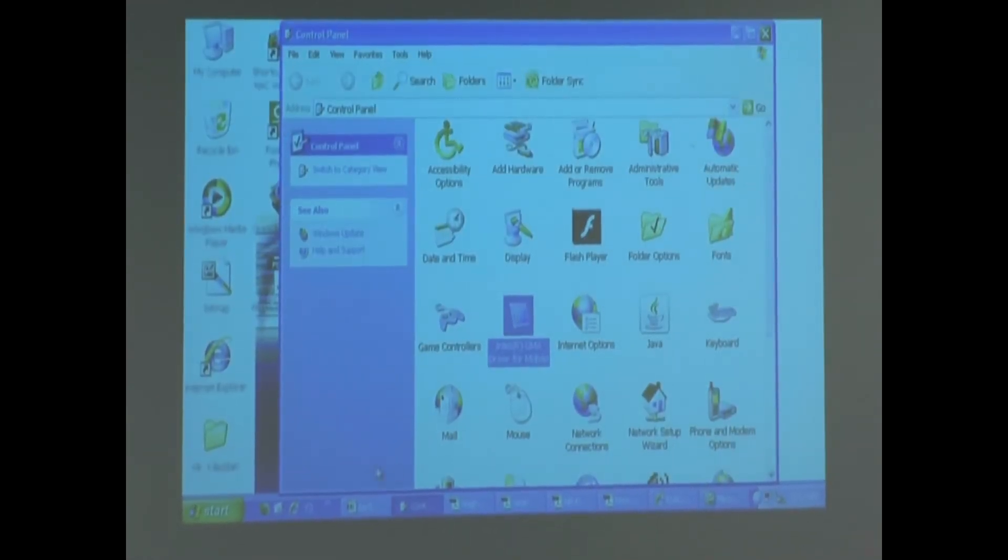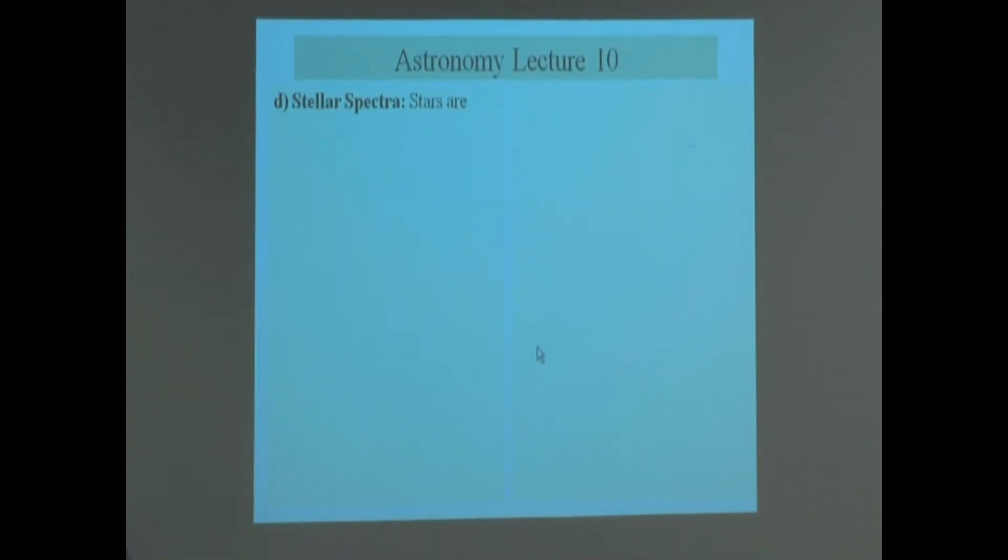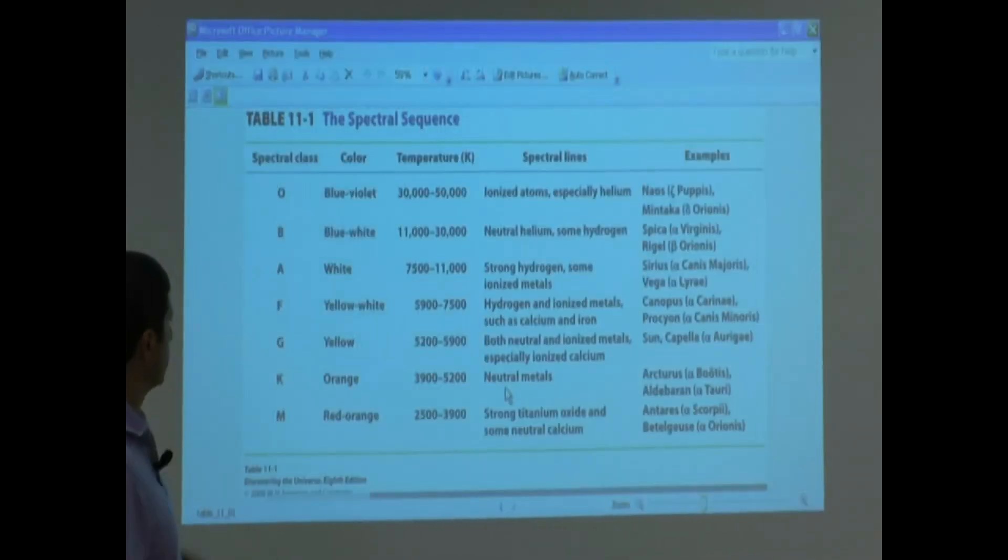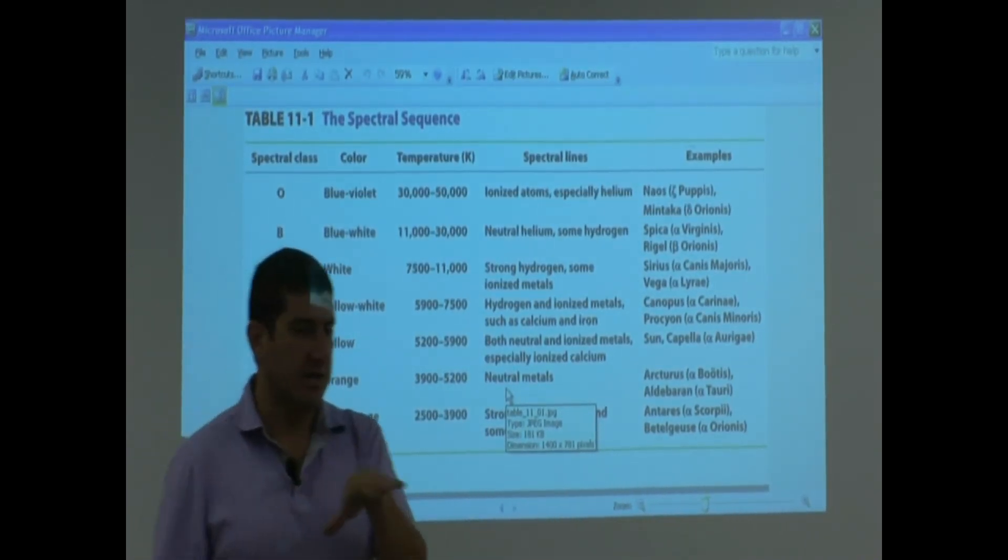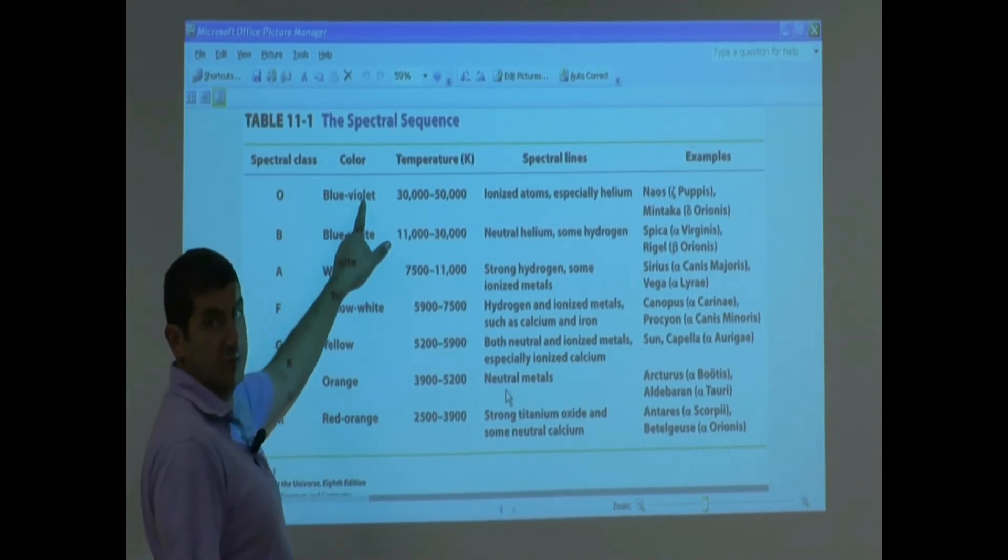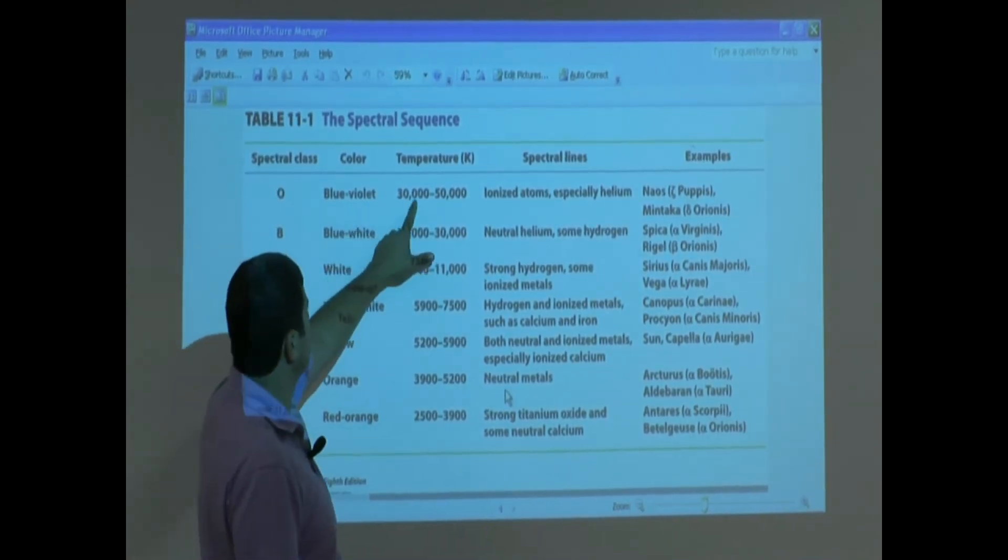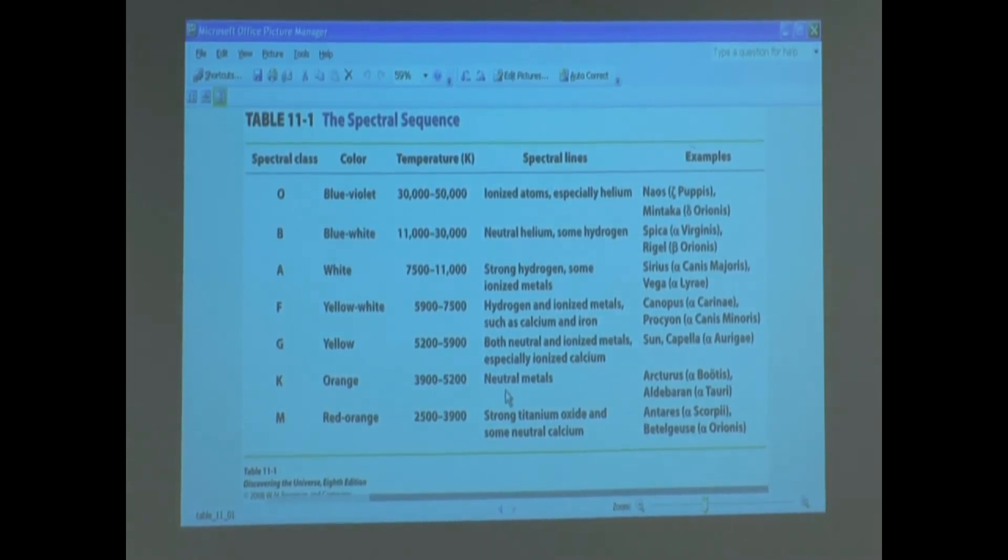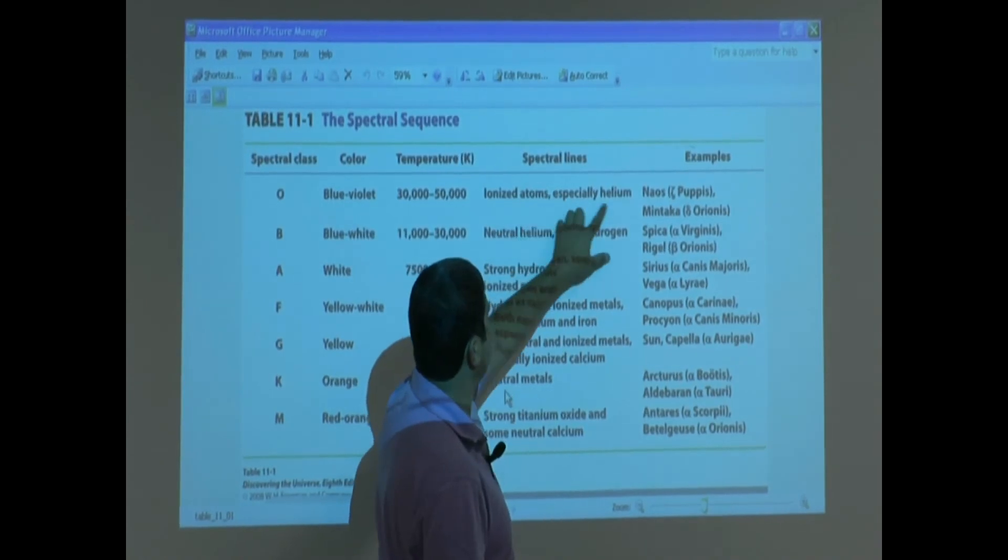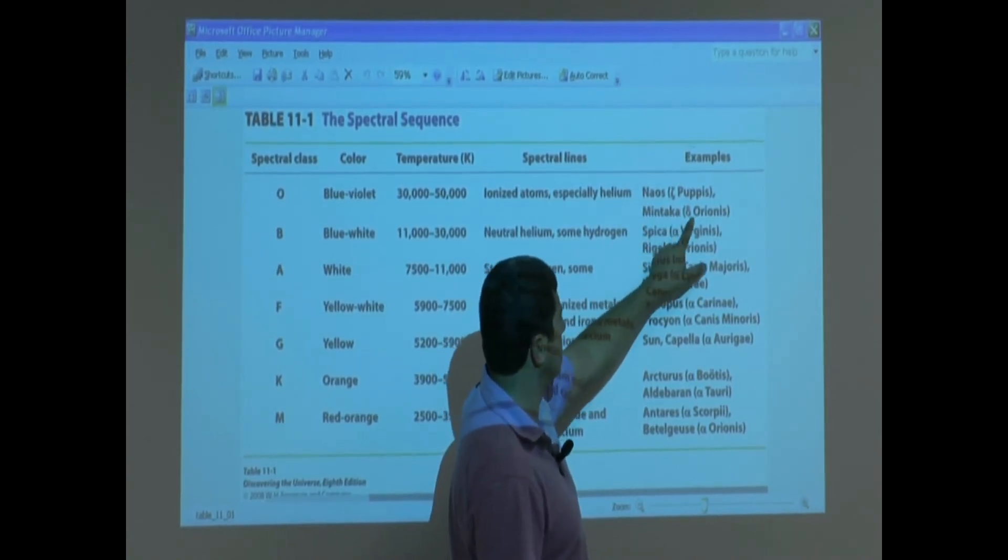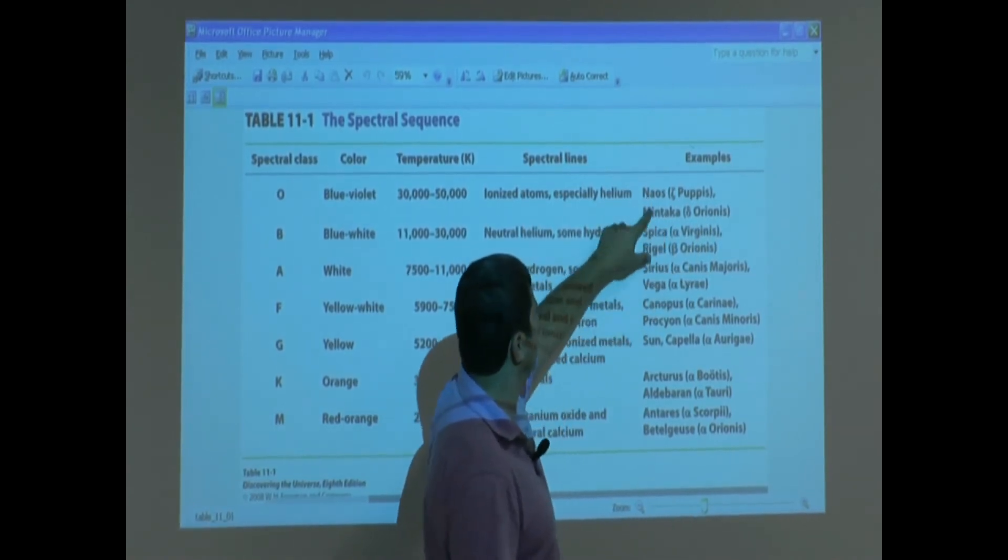Let's see what this table shows us. Here is how they started categorizing them. They noticed that the O stars, when you kind of look at them, they appear blue-violet. Those are the hottest ones. Their temperatures range from 30,000 to 50,000 Kelvin. And the spectral lines that they noticed in them, even though there aren't that many, they noticed that they have ionized atom spectral ion, especially helium. Example of that: Naos and Mintaka, Delta Orionis, the fourth brightest star in the constellation Orion. Those are categorized O.